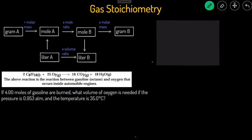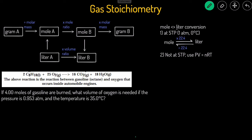Let's talk about how to do the mole-to-liter conversion. That depends on your conditions. If the problem is at STP — standard temperature and pressure, meaning pressure is 1 atm and temperature is 0°C or 273 K — you can directly convert between moles and liters by multiplying by 22.4, because at STP one mole of gas takes up 22.4 liters. If you're not at STP, you'll need to use the ideal gas law PV = NRT.